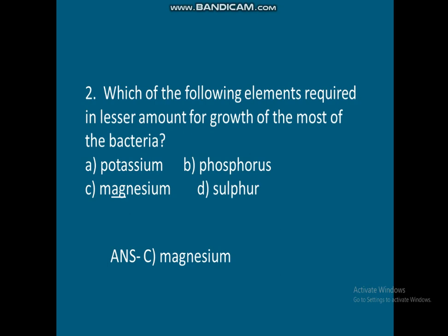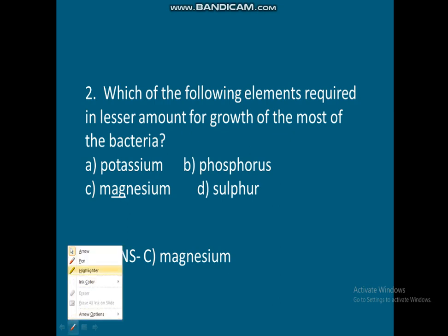Question 2: Which of the following elements is required in lesser amount for the growth of most bacteria? Option A: Potassium. Option B: Phosphorus. Option C: Magnesium. Option D: Sulfur. Answer is Option C — magnesium.